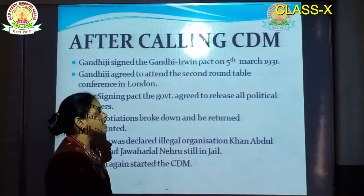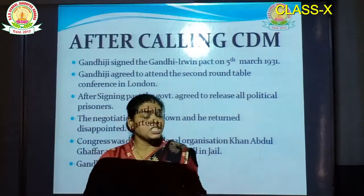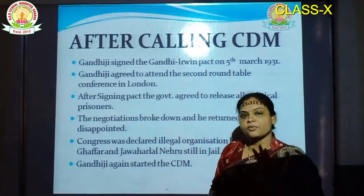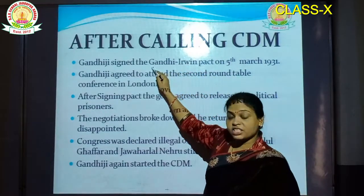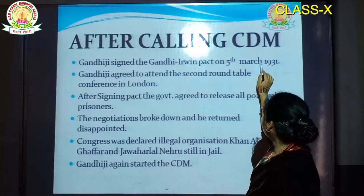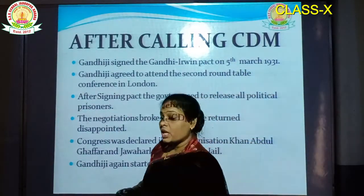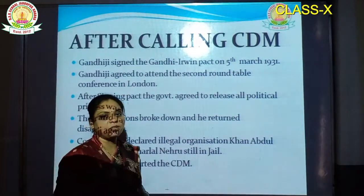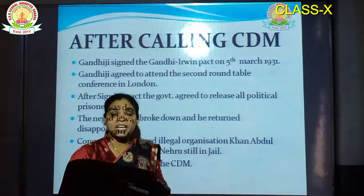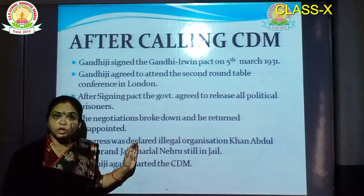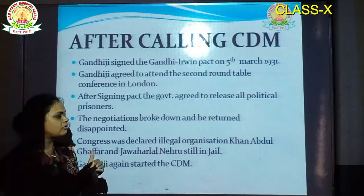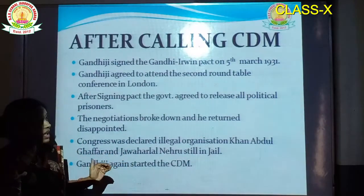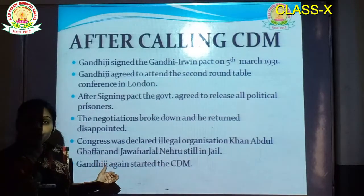Gandhiji signed the Gandhi-Irwin Pact on March 5, 1931. First, this means Gandhiji had sent a letter with 11 demands to Viceroy Irwin. But Viceroy Irwin denied and CDM was launched. Again, Irwin sent a message to Gandhiji and they signed a pact on 5th March 1931. According to this pact, Gandhiji agreed to attend the second Round Table Conference in London. The first Round Table Conference was not very successful because the discussions were totally refused by INC members. And Irwin had kept the proposal of dominion status.